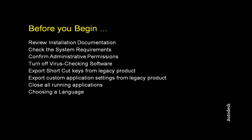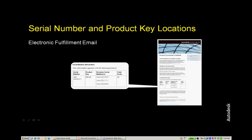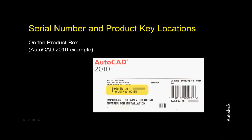Choose a language to install and locate your serial number and product key for the installation. One of the ways to get the product information — serial number and product key — will be from the electronic fulfillment email you'll receive from Autodesk. If you or your company do not wish to download the product and would rather have it shipped, you will need to notify Autodesk through the Autodesk Subscription Center.